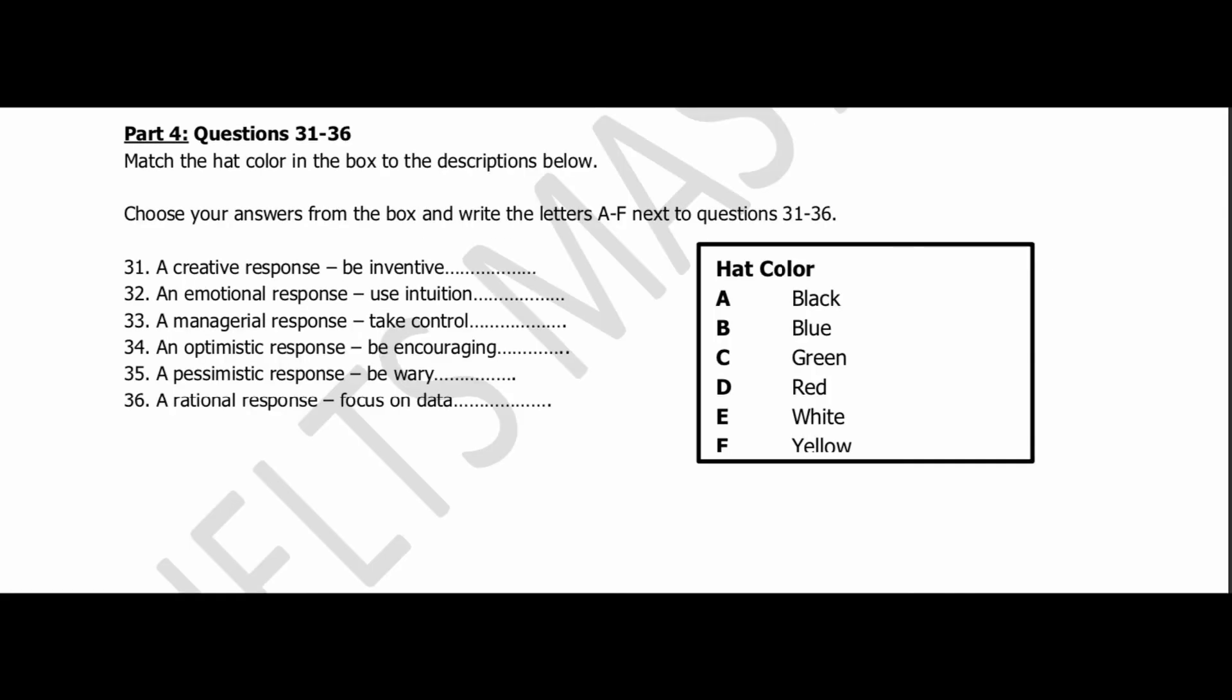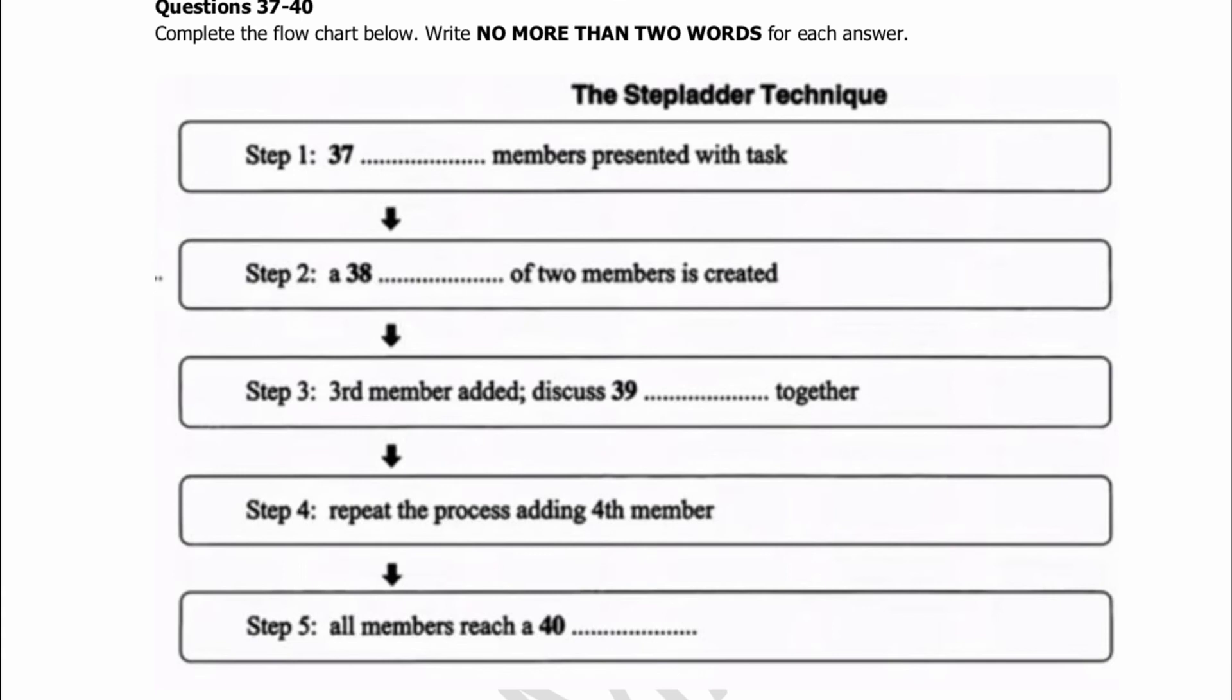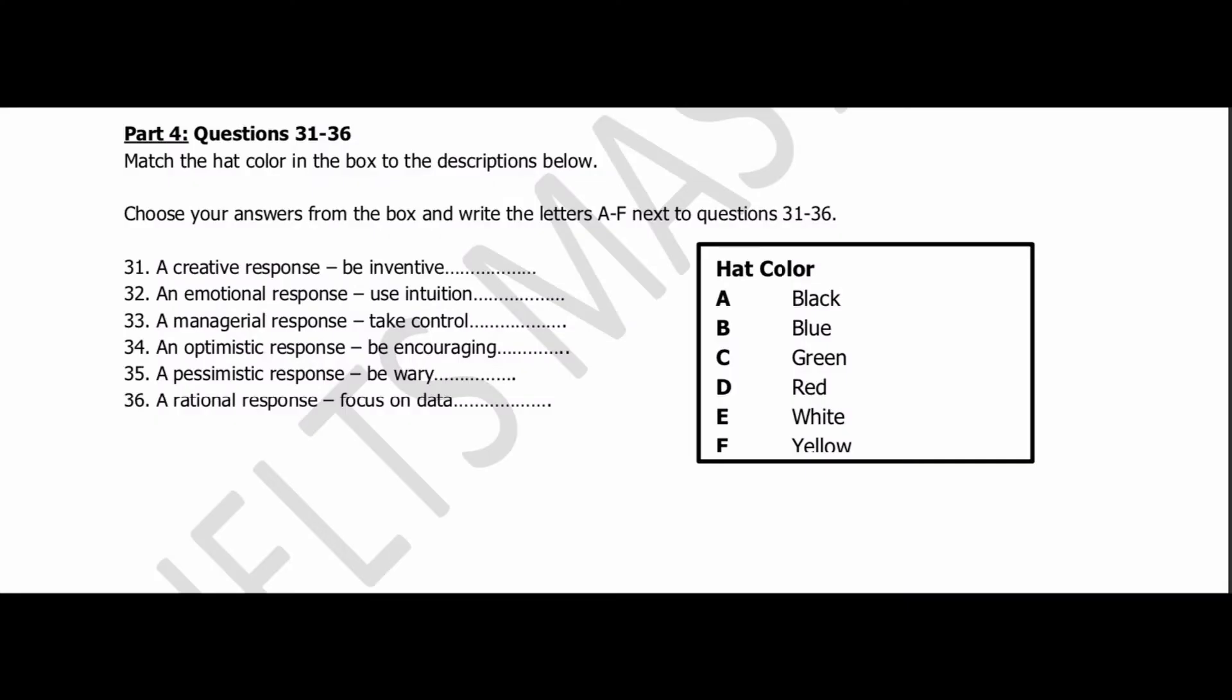Now turn to Section 4. You will hear a talk on the topic of decision-making and problem-solving. First, you have some time to look at questions 31 to 40. Listen carefully and answer questions 31 to 40. Good morning. Today, as part of your business management course, we're starting a unit on problem-solving skills and decision-making. Let's start with a powerful decision-making technique developed by Edward de Bono in his book Six Thinking Hats, which you'll find on your required reading list. The method works by compelling you to move outside your habitual ways of thinking.